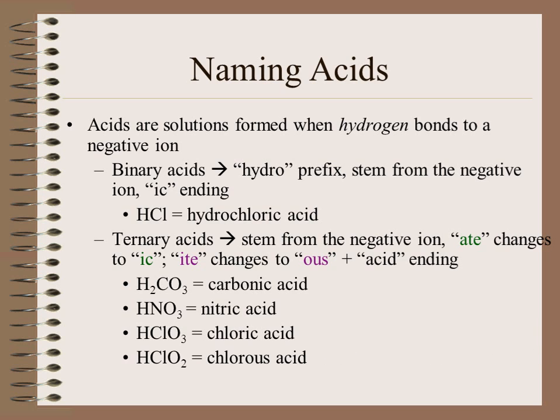If we compare two of the chlorine ternary acids: HClO₃, with ClO₃ being chlorate, that would form chloric acid, whereas chlorite, ClO₂, would form chlorous acid.